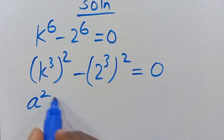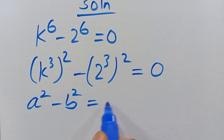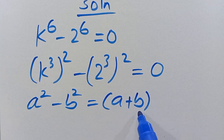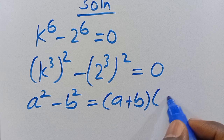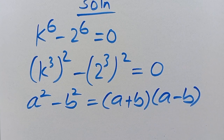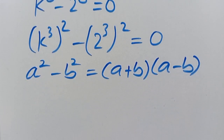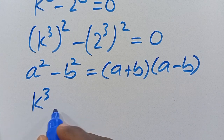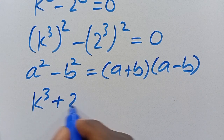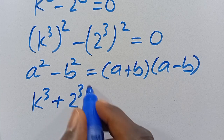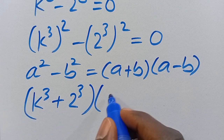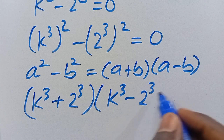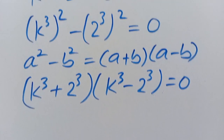Recall that when we have a squared minus b squared, it equals a plus b in brackets multiplied by a minus b. So we can have it here as k to the power of 3 plus 2 to the power of 3, multiplied by k to the power of 3 minus 2 to the power of 3, equals 0.